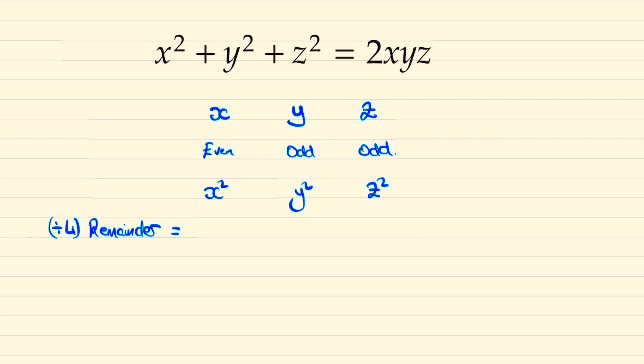If we take an even number, which will be a multiple of 2, times it by itself, then we're guaranteed to make it a multiple of 4. And therefore the remainder when divided by 4 will be 0. Likewise, if we take an odd number and we square it and then divide it by 4, the remainder will be 1. So y squared and z squared will have a remainder of 1, which means the left-hand side of this question will leave a remainder of 2 when we divide it by 4.